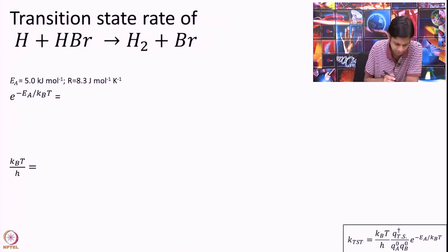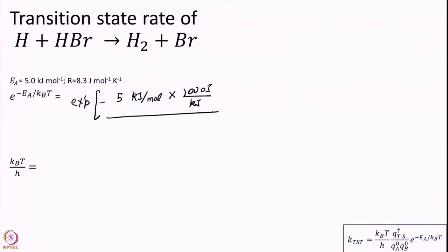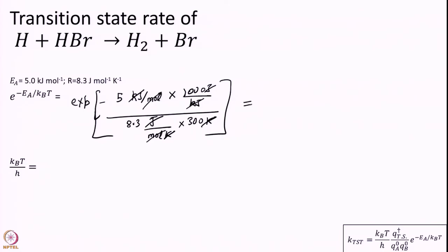Finally, we calculate the exponential factor and kT/h. The exponential is e^(−Ea/RT): Ea = 5 kJ/mol × 1000 J/kJ, R in J/(mol·K), T = 300 K. Kelvin cancels with Kelvin, kilojoules cancels, joules cancels, mole cancels — everything is dimensionless as required. Plugging in gives the exponential factor of 0.13.